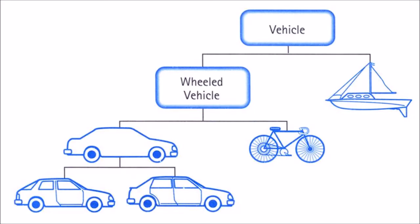Different objects can respond to the same message in different ways. The car, motorcycle, and bicycle will all respond to the stop message, but the actual operations performed are object specific. It is the receiver's responsibility to respond to a message in an appropriate manner. This gives a great deal of flexibility since different objects can respond to the same message in different ways. This is known as polymorphism.